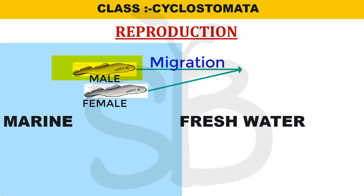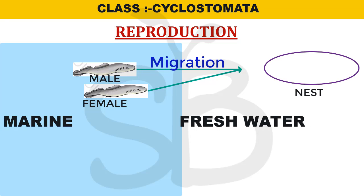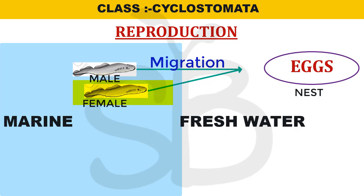In reproduction, the male organisms migrate to fresh water rivers, where the male organism forms a nest for reproduction.